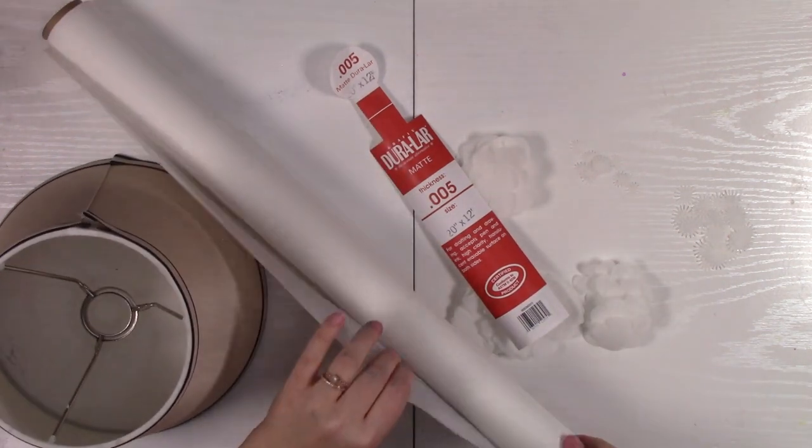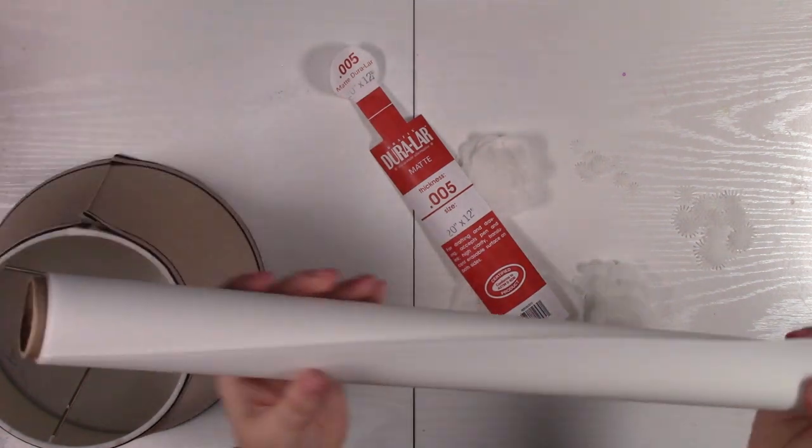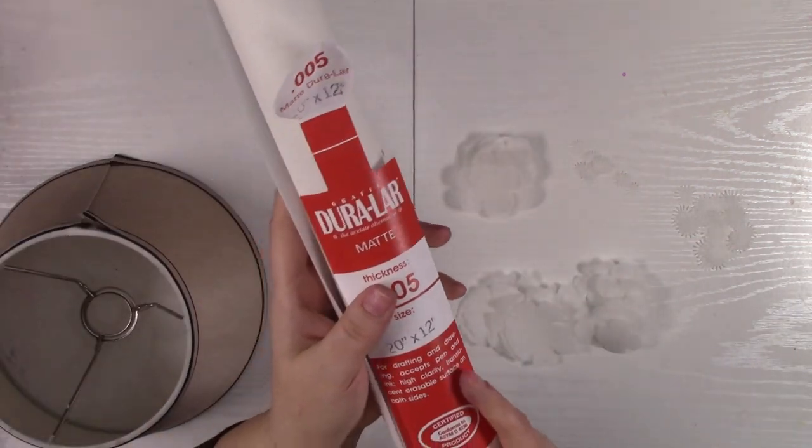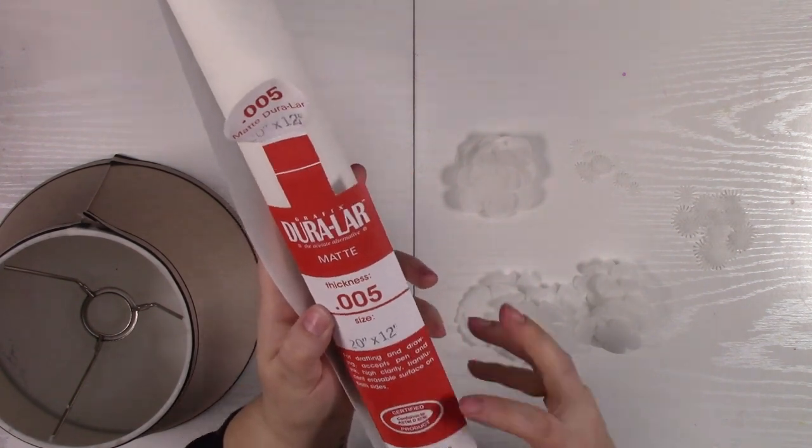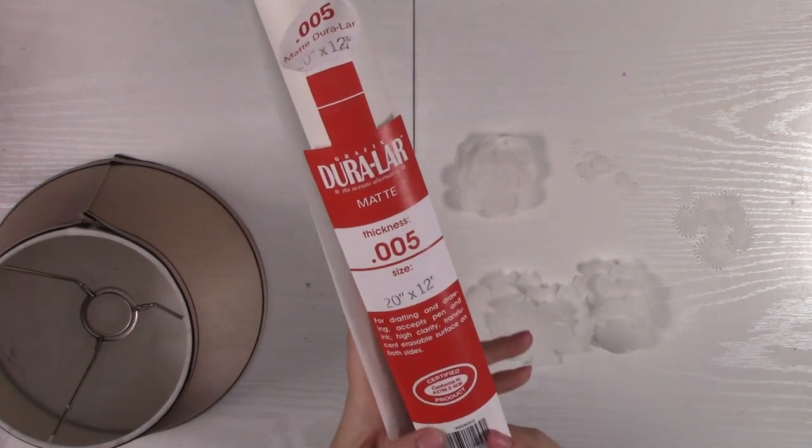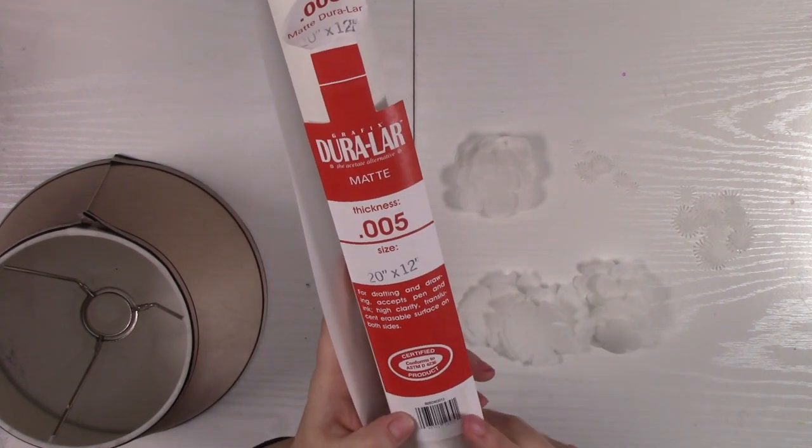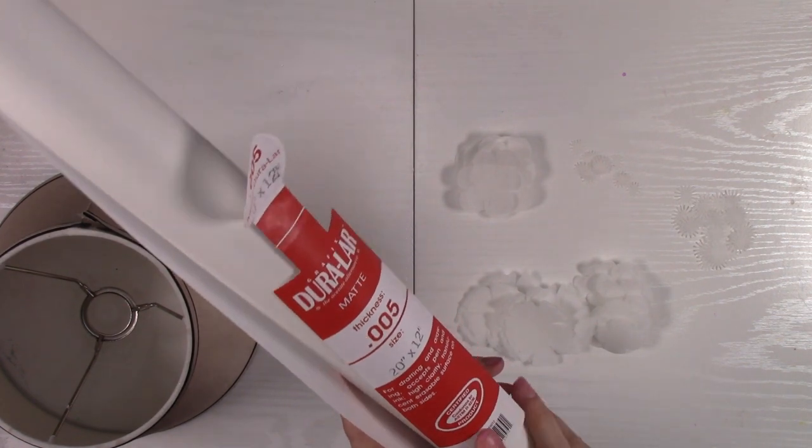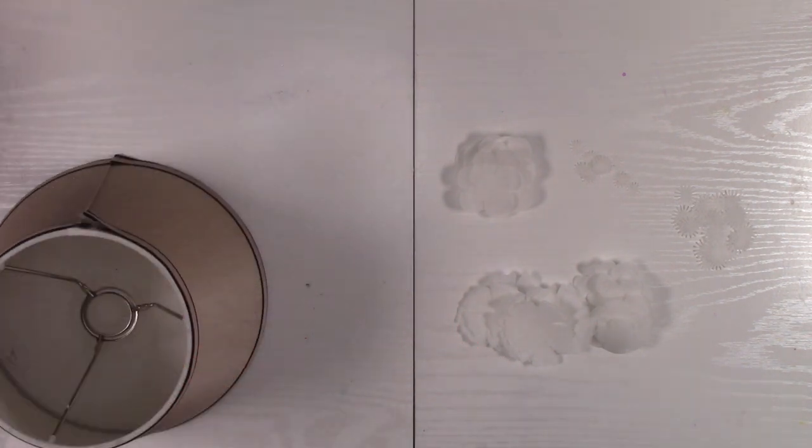So just really quick, I am using a roll of Matt Duralar. Here are the specifics about it. It comes on a roll, it is 20 inches wide by 12 feet long, so you can do all sorts of really amazing things with this version of Matt Duralar. I'm so excited to do this today.